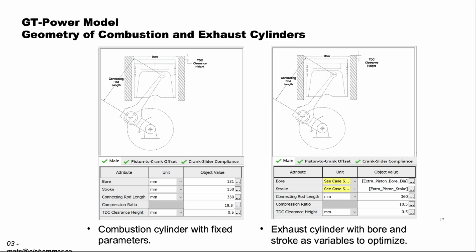So you have a bore of 131 and a stroke of 158 and a compression ratio of 18.5. And then we have the exhaust piston, and here we have variables for the bore and stroke so we can change them as we test.